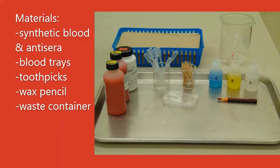Blood typing. Materials: synthetic blood and antisera, blood trays, toothpicks, wax pencil, and a waste container.